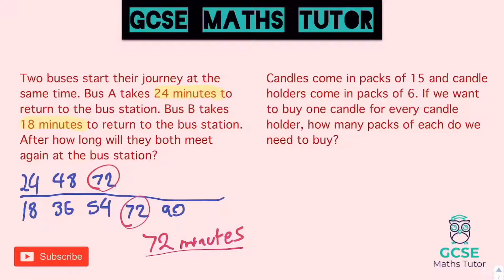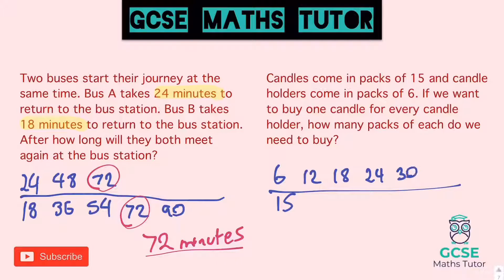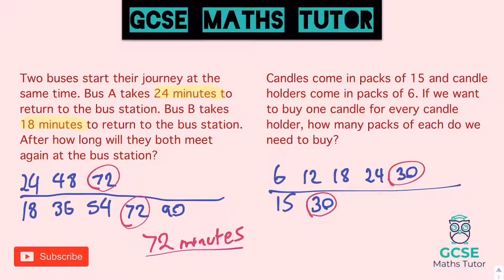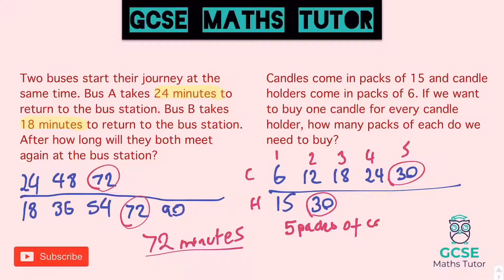Candles come in packs of 15 and candle holders come in packs of 6. If we want one candle for every candle holder, how many packs of each do we need? So 6 and 15. Multiples of 6: 6, 12, 18, 24, 30. And 30 is going to be a match for 15 as well. So 30 is our lowest common multiple. For the candles (packs of 15), that's 2 packs. For the holders (packs of 6), counting along: 1, 2, 3, 4, 5 — that's 5 packs.